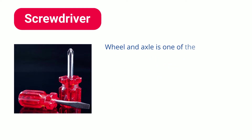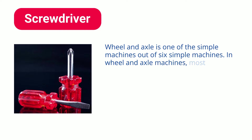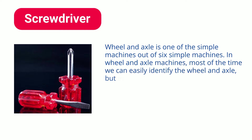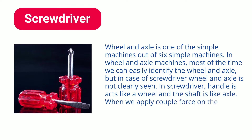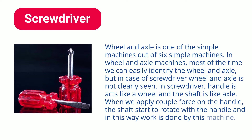Wheel and Axle is one of the six simple machines. Most of the time we can easily identify the Wheel and Axle, but in the case of a Screwdriver, Wheel and Axle is not clearly seen. In a Screwdriver, the Handle acts like a wheel and the Shaft acts like an Axle. When we apply a couple force on the Handle, the Shaft starts to rotate with the Handle, and in this way work is done by this machine.